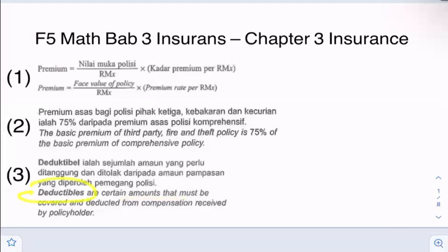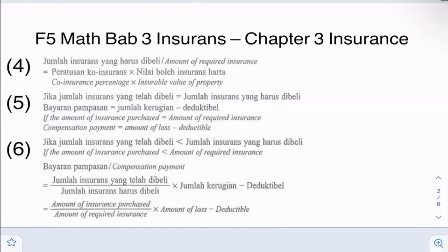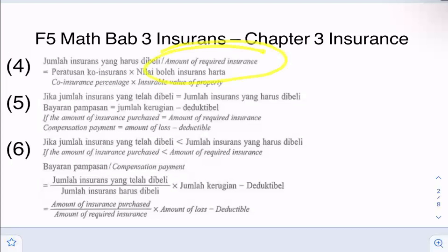Next, we have deductible, which is a certain amount that the policyholder has to bear before they can get compensation. The following equation is for co-insurance. An example of co-insurance is 80-20, which means 80% will be paid by the insurance company and 20% is paid by the policyholder. In point four, we have the amount of required insurance, which is the amount of insurance you have to buy based on your co-insurance percentage.